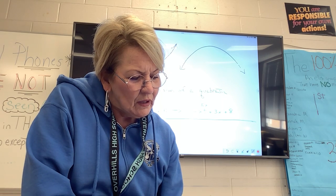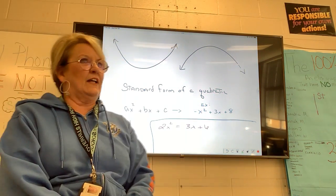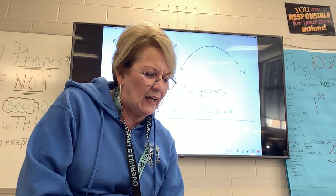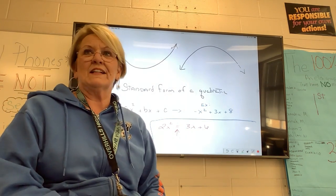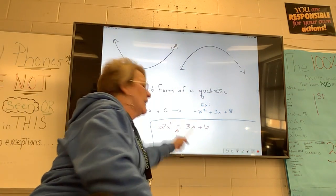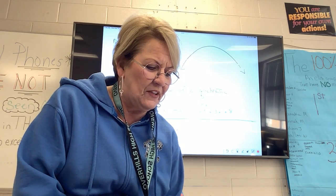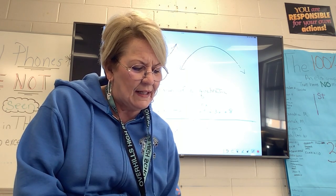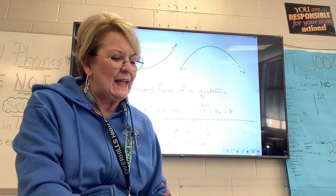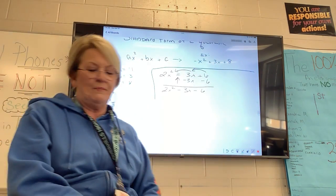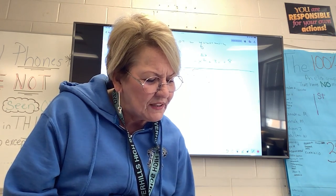What if you have 2X squared equals 3X plus 6? That is not standard form because there's an equal sign in the middle, and standard form has no equal sign like that. How do you make that standard form? Move the 3X over and move the 6 over — take away 3X and take away 6. That gives me 2X squared minus 3X minus 6. Now I can identify: A equals 2, B equals negative 3, and C equals negative 6.